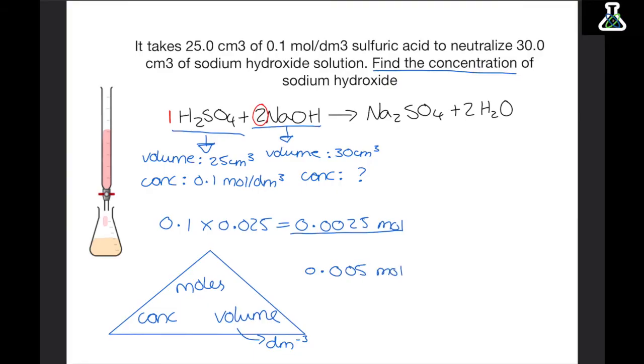Now the final step is to use the concentration equation to find the concentration of the sodium hydroxide. And we just need to divide the moles by the volume. So we have our 0.005 moles divided by the volume. And again the volume has to be in decimetre cubed. So we divide it by 1000. So 0.03. And this equals 0.167 moles per decimetre cubed. And this is the concentration of the sodium hydroxide.